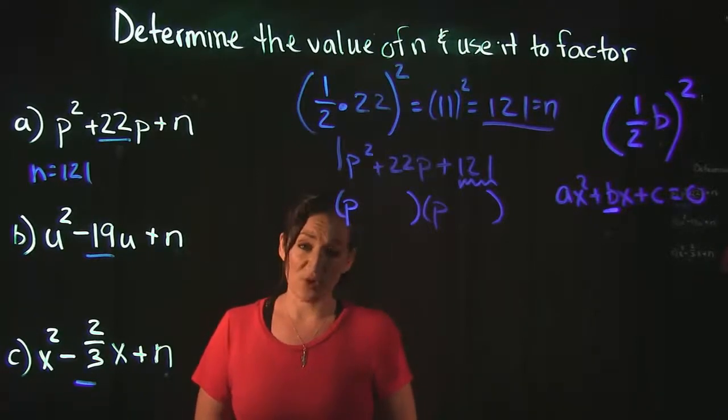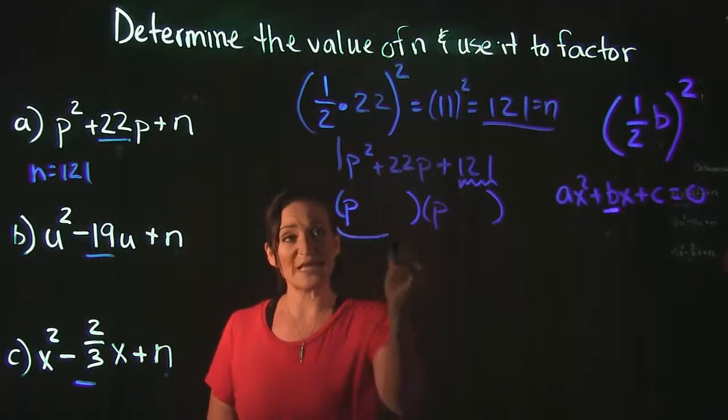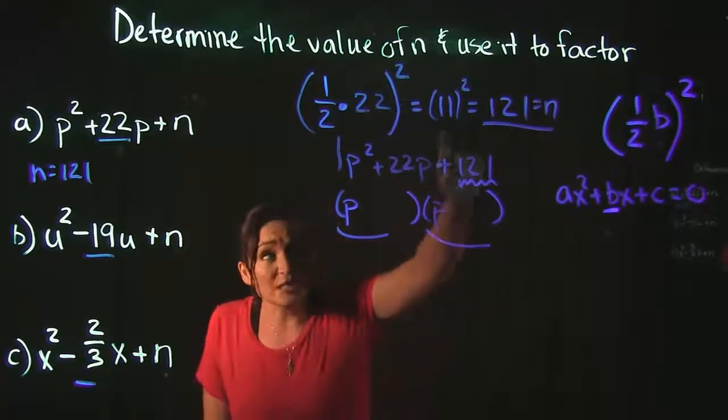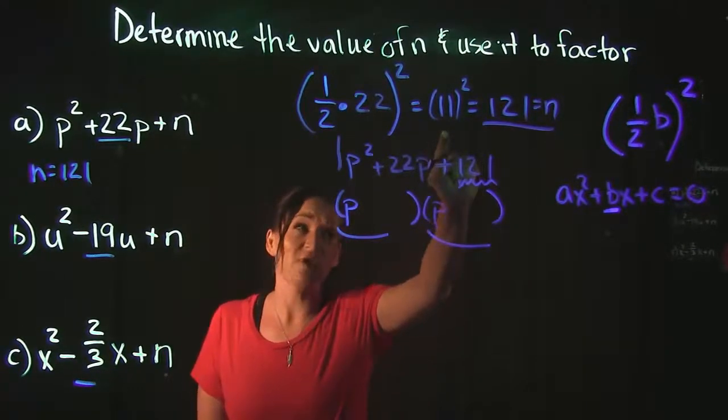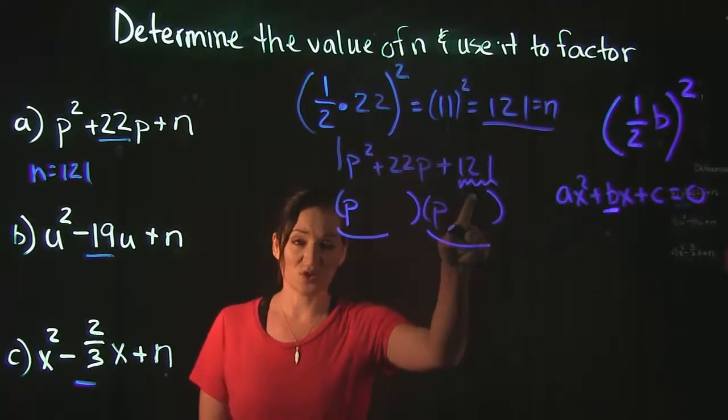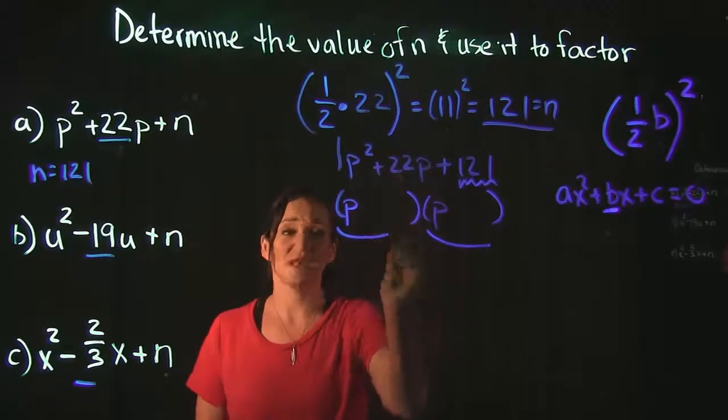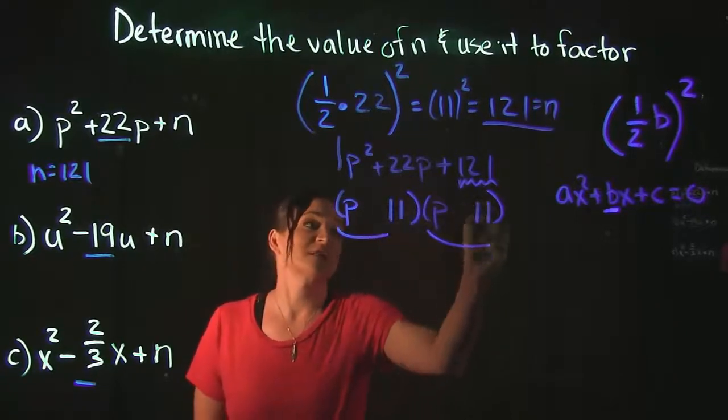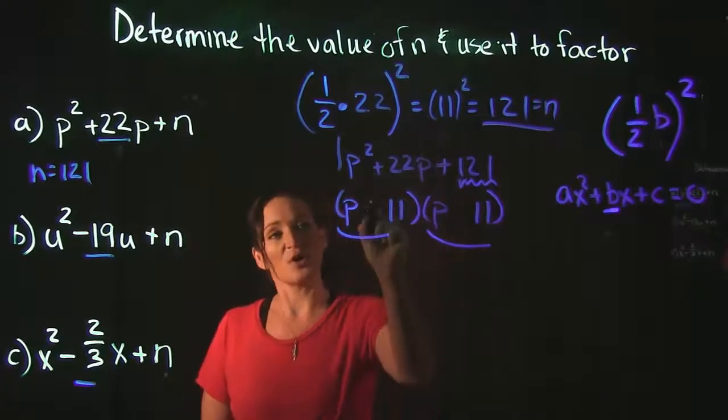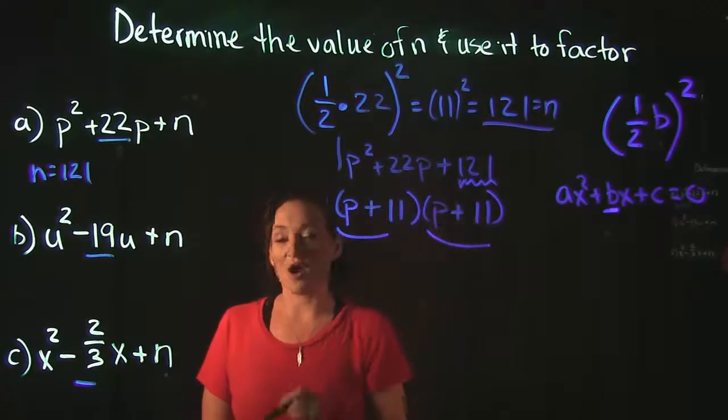We do need to keep in mind that these are perfect square binomials, so we should get the same factor in each one of these. And we literally just did 11 times 11 to get 121. So we know 11 times 11 is 121, and 11 plus 11 is 22. So 11 is going to go in these spots here. Everything is positive in our trinomial, so everything is positive in our factors.